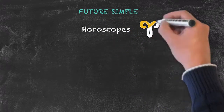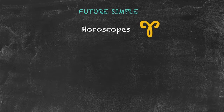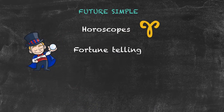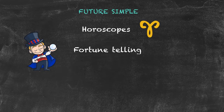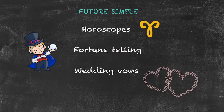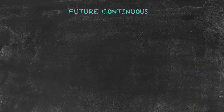Additional ideas for the future simple include horoscopes: divide the class into groups, provide each group a zodiac sign, they create a horoscope, then share and see who it applies to. There's also fortune telling as a role play — the fortune teller makes statements like 'you'll have a baby next year' or 'you'll get a great job promotion soon.' Finally, wedding vows: encourage students to create ideal or silly wedding vows — essentially any promise — which could also include employment contracts.